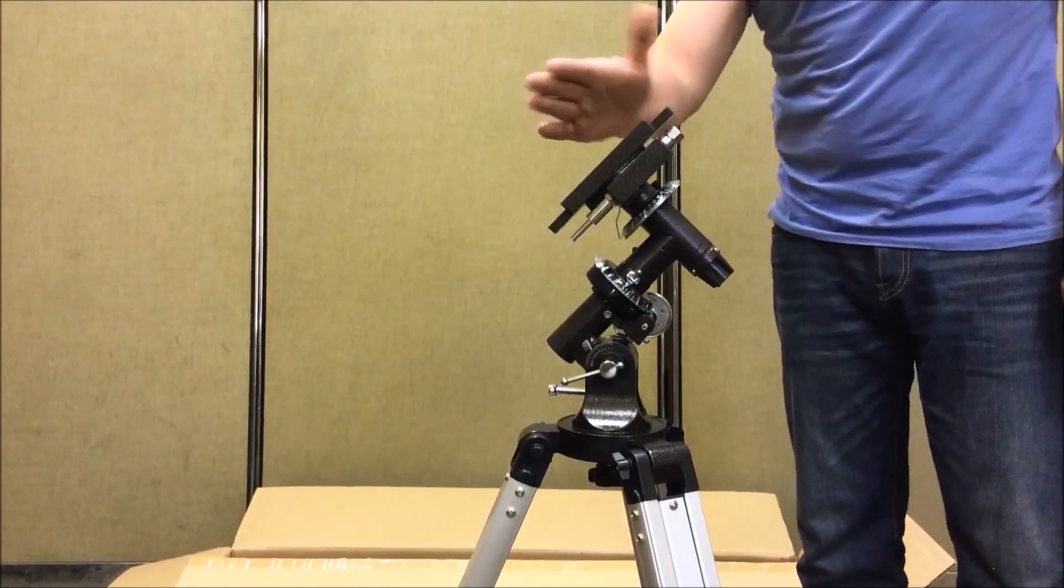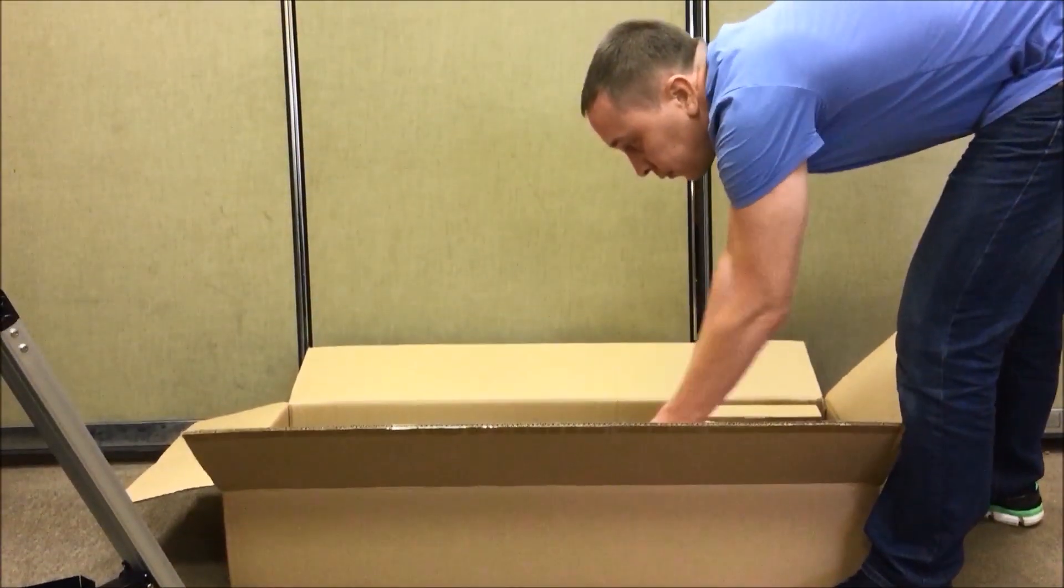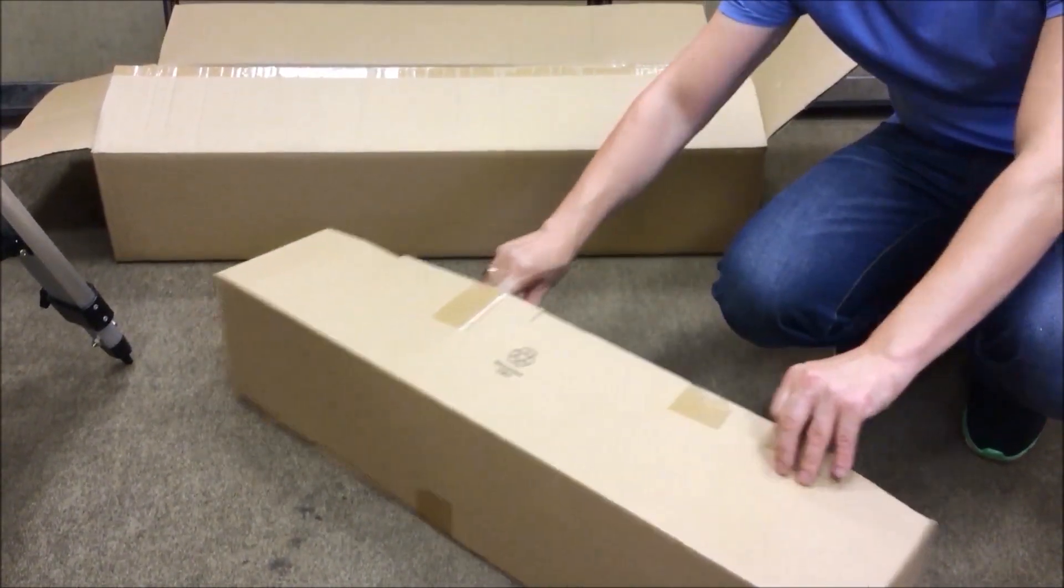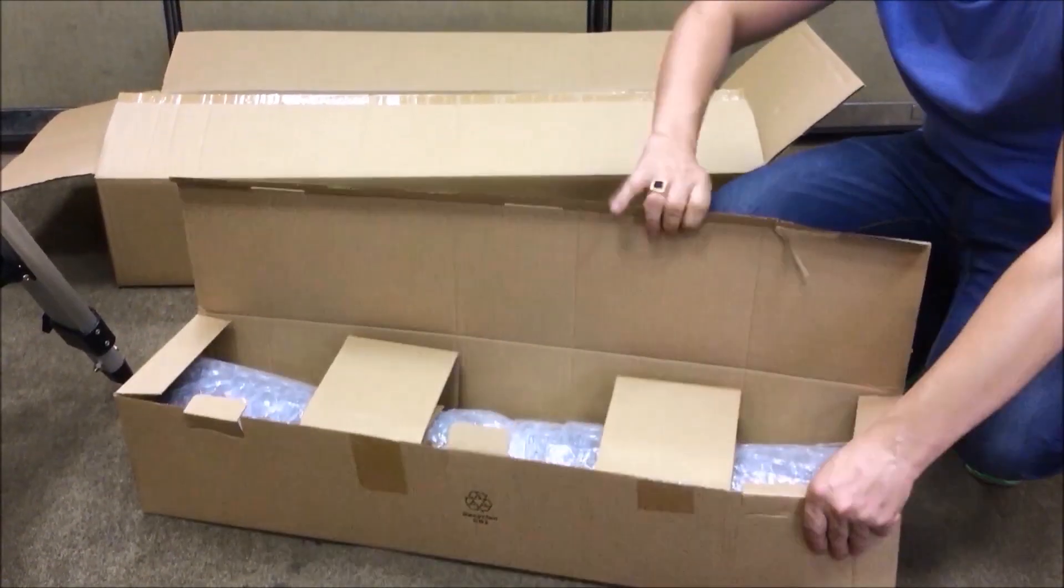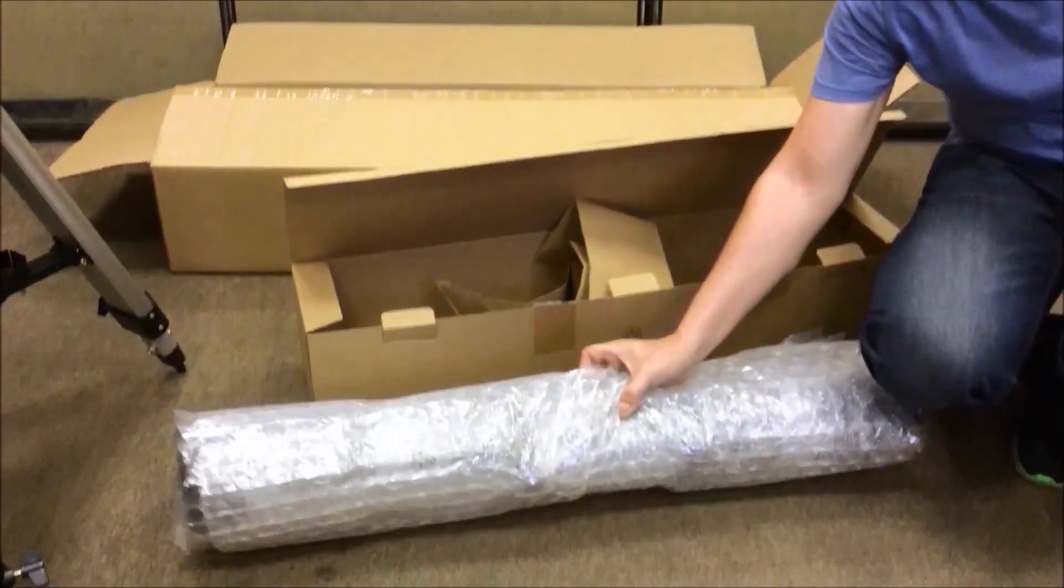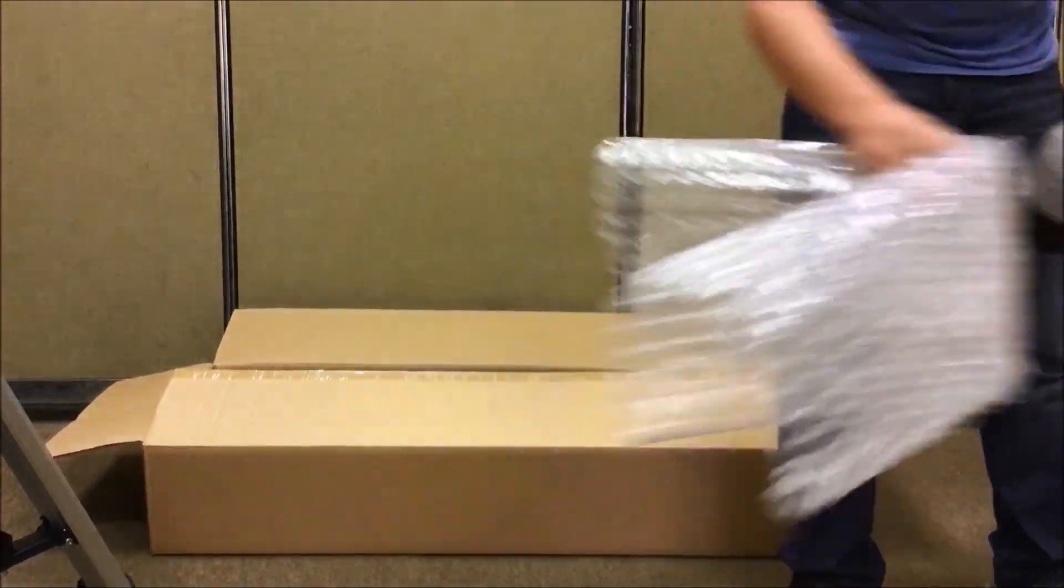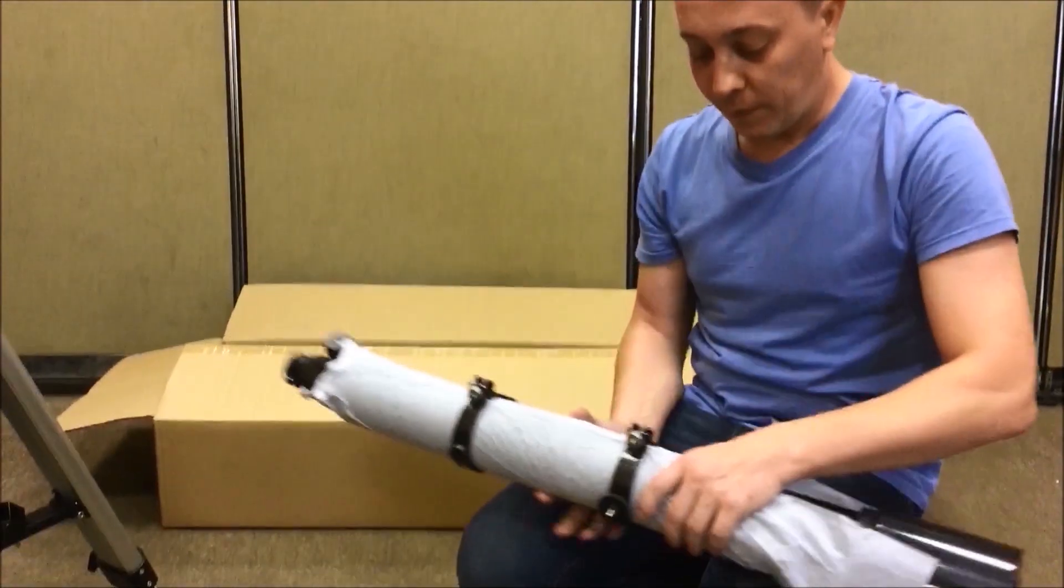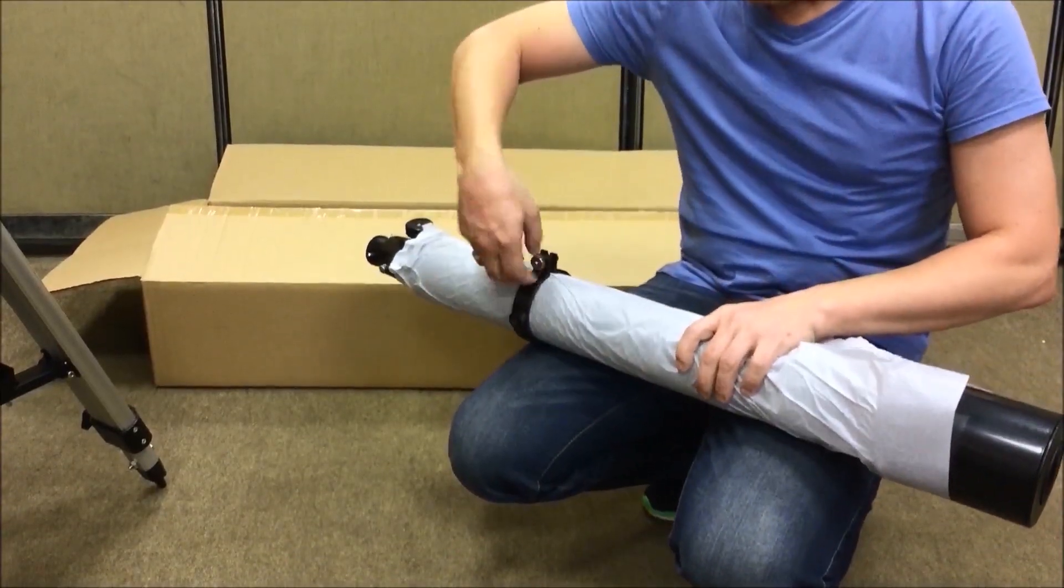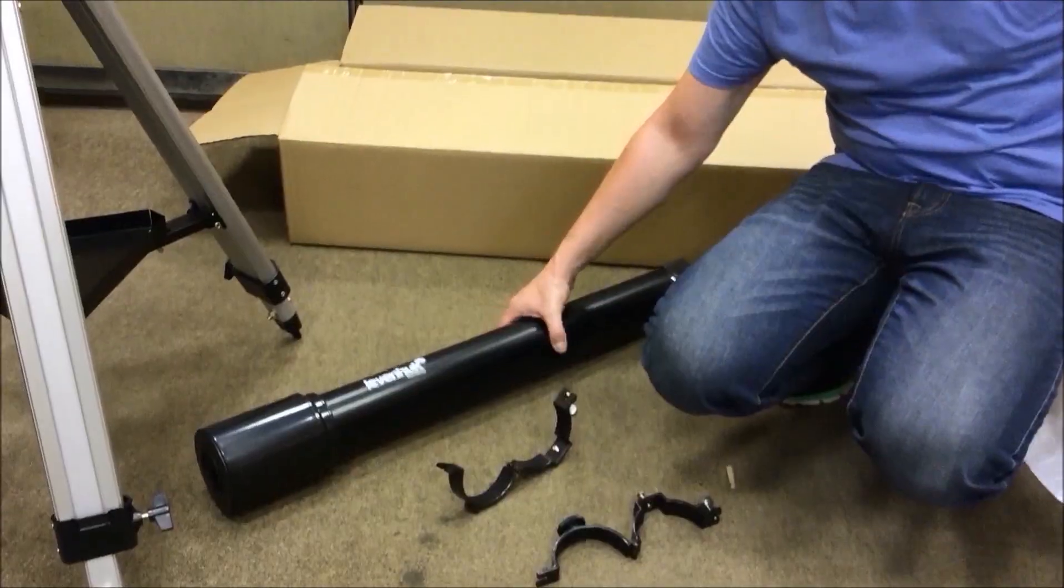Now here is where the optical tube goes. Let's unpack the telescope too. It's securely packed to avoid any damage during transportation. We need to remove the packaging tape, bubble wrap, and paper. To get rid of the paper, we recommend removing the tube rings. The tube is ready for installation.